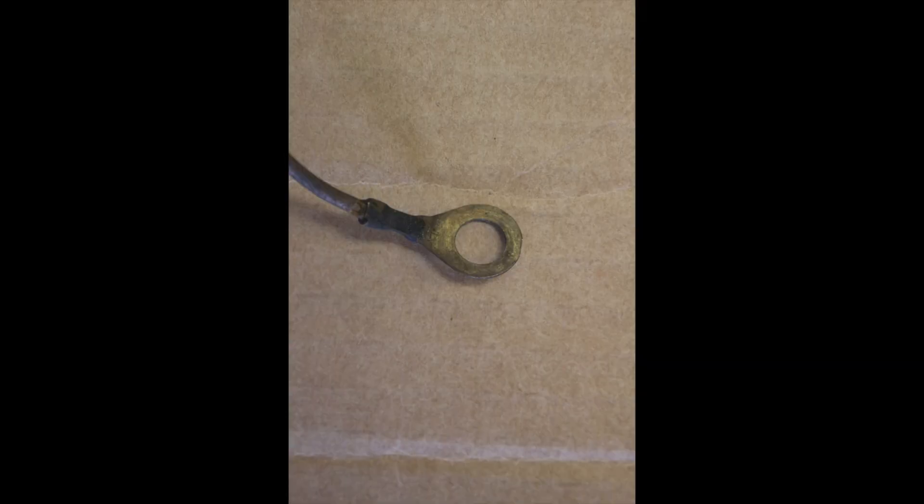On the Zuffenhausen car, you have a single rear ground, and the Karmanns have a two-wire ground. So, basically, here's a picture of the single-wire ground, and then here's a picture of the two-wire ground.